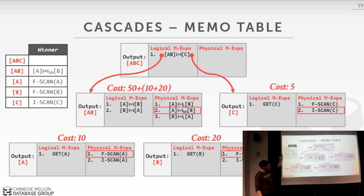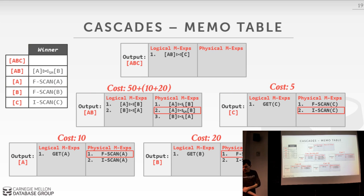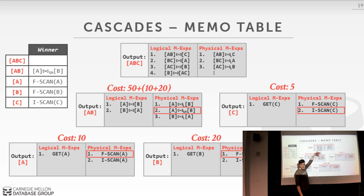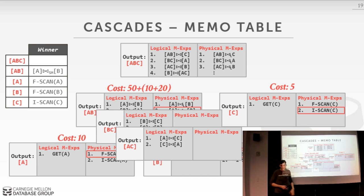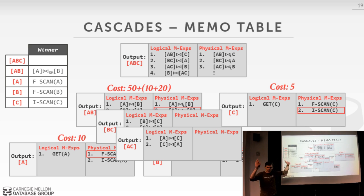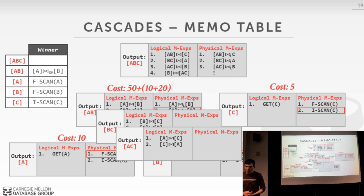Going back up, we traverse down the other side and do the same for C, getting another cost. Now at the root group, we can apply additional logical transformations to expand it out with different join orderings, or do physical transformations. Different join orderings at the root create new groups that each carry all the transformation information for their sub-expressions. This contrasts with System R's bottom-up approach: start with nothing, plan individual access methods, join pairs, then triples — whereas Cascades starts logically at the top and works downward.